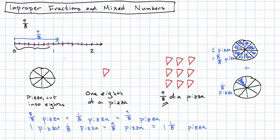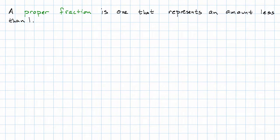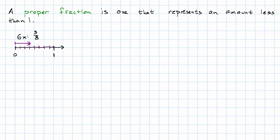Just looking at what we have in this picture, when we put them together, we have 9 eighths of a pizza. We could also think about that as 1 pizza plus 1 eighth of a pizza is 9 eighths of a pizza. We could write that instead as 1 and 1 eighths pizza. Looking at these unit lengths again, we see that we have a whole unit length plus 1 eighth. So in terms of unit lengths also, we could say that 9 eighths is 1 whole unit length plus 1 eighth. Let's introduce some terms to describe what we're seeing. A proper fraction is a fraction that represents an amount that's less than 1. For example, 3 eighths, if we draw it as a length, that's shorter than 1 whole unit. So 3 eighths is a proper fraction.